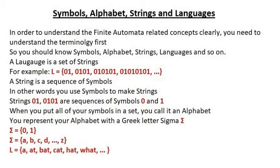We have covered two examples. We have a language of strings made using symbols 0s and 1s, and we have a language made with strings using symbols A, B, C, D, up to Z. To recap: a language is a set of strings; a string is a sequence of symbols; and when we put our symbols in the form of a set, we call it an alphabet, represented by the Greek letter sigma.